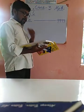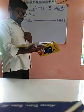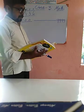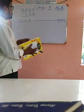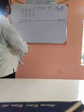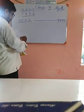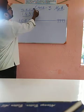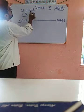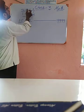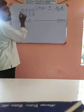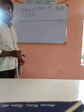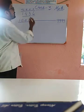Now we will discuss the place value and face value of any number. I have written one thousand four hundred and thirty six. Six is on the ones place, three is on the tens place, four is on the hundreds place, and one is on the thousands place. Now if you expand this number, we can write it like this.